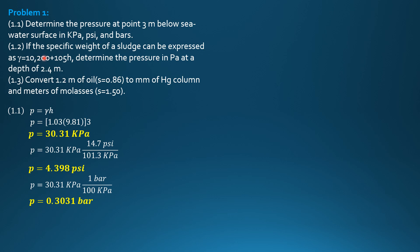Problem 2: if the specific weight of a sludge can be expressed as γ = 10,200 + 105h (in N/m³), determine the pressure in pascals at a depth of 2.4 meters. It must be in N/m³, not kN/m³, since the constant 10,200 already exceeds 9,810 N/m³ (the specific weight of water). Since specific weight varies with depth, we use the differential form: dP = γ dh.